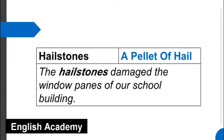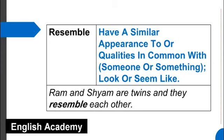Hailstones means a pellet of hail. Example sentence: The hailstones damaged the window panes of our school building. Resemble means have a similar appearance to or qualities in common with someone or something; look or seem like. Example sentence: Ram and Shyam are twins and they resemble each other.